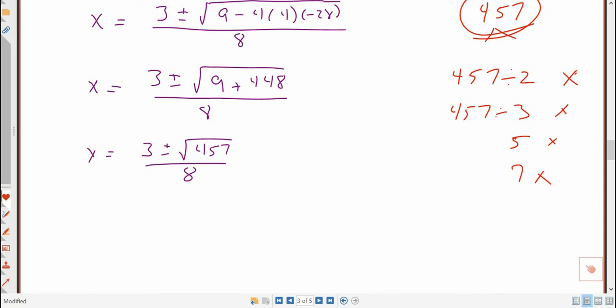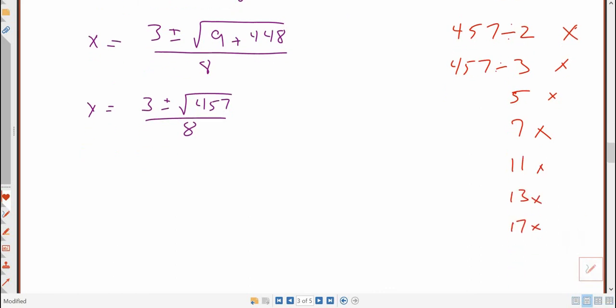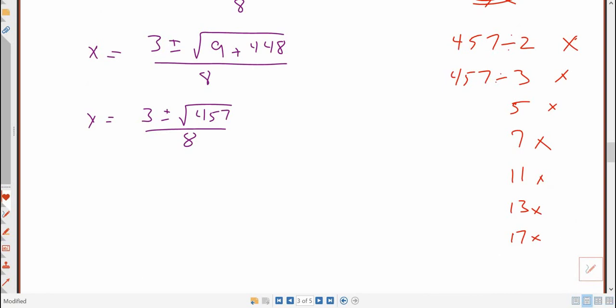So 8, 9, 10. So I would try 11. Then I would try 13. That doesn't work. Then I'd try 17. That didn't work. Then I tried 19. That didn't work. And then 21 is a multiple of 7, and I've already tried 7. So nothing divides into its prime number. Then I have those two solutions.